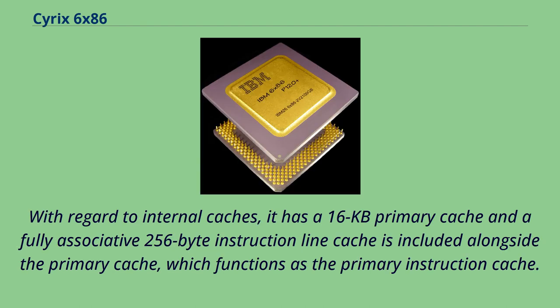With regard to internal caches, the 6x86 has a 16-kilobyte primary cache. A fully associative 256-byte instruction line cache is also included alongside the primary cache, which functions as the primary instruction cache.